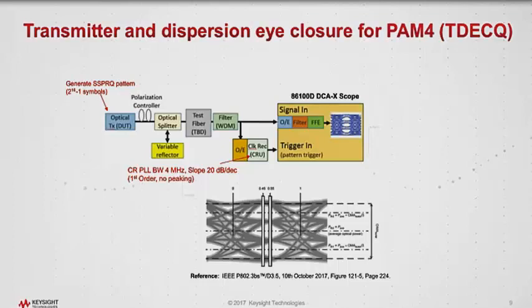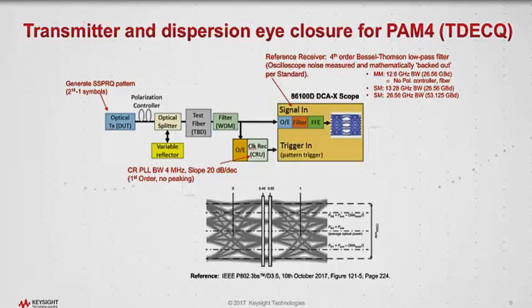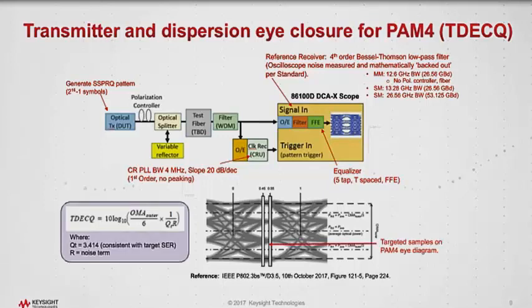Clock recovery is needed because if you were to trigger the oscilloscope using a trigger from your pattern generator, you no longer have coherence between the trigger signal and the data signal. The clock recovery is specified at 4 MHz loop bandwidth with first order — meaning no peaking in the response. You also need a very well-controlled reference receiver with specified bandwidth depending on the baud rate. There's also an equalizer, since all of these links are operating on the order of 10 to the minus 4 — fairly closed eyes that need to be opened for analysis. The TDEC-Q equalizer is a 5-tap T-spaced FFE. Histogram measurements are then made on the PAM4 signal and post-processed to get the TDEC-Q result.